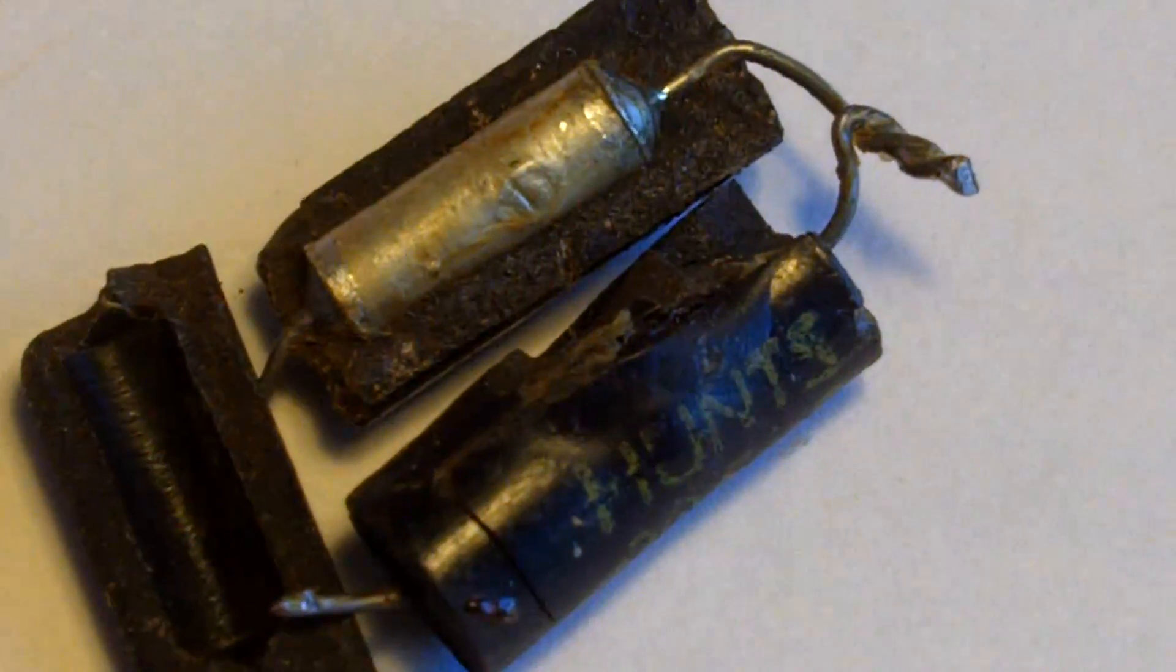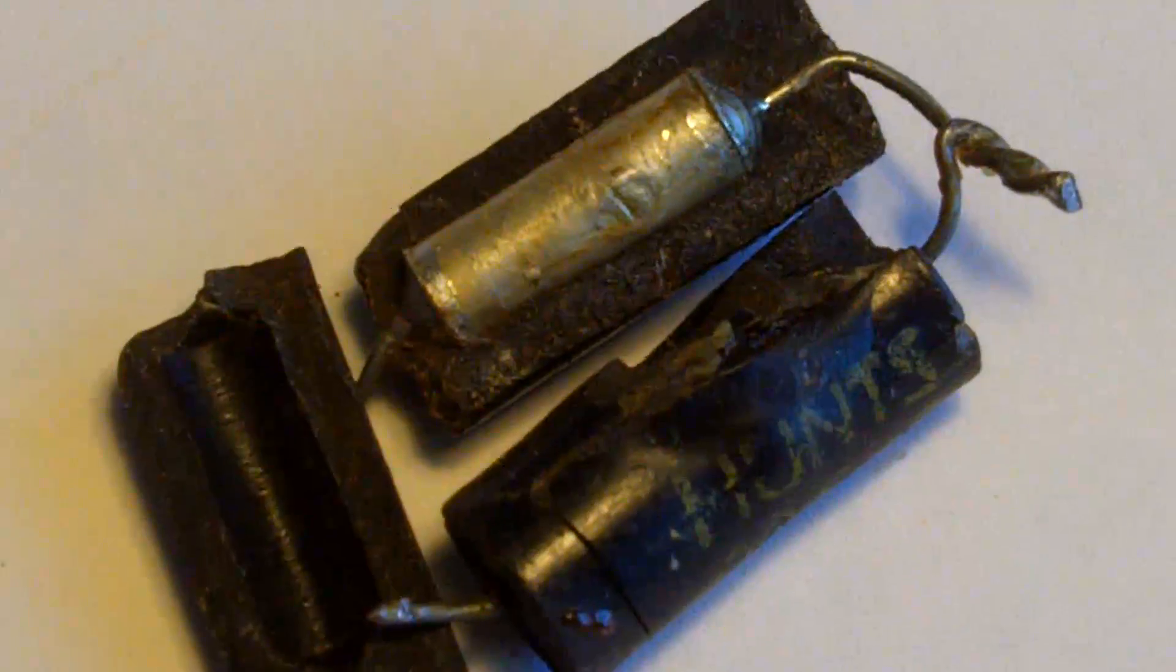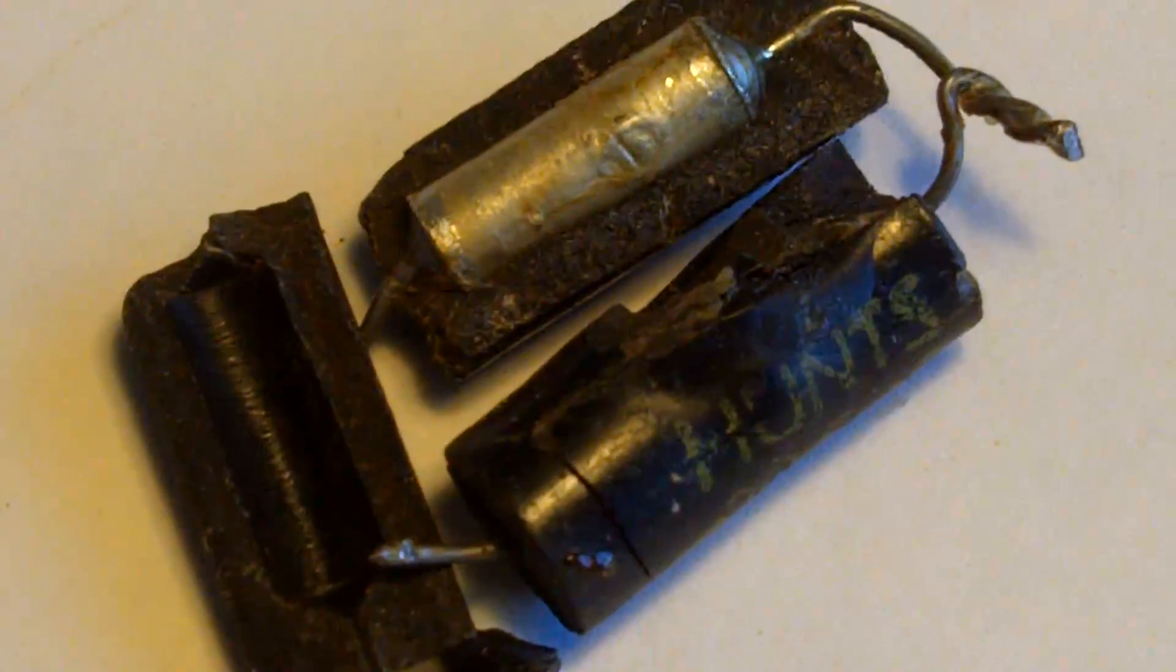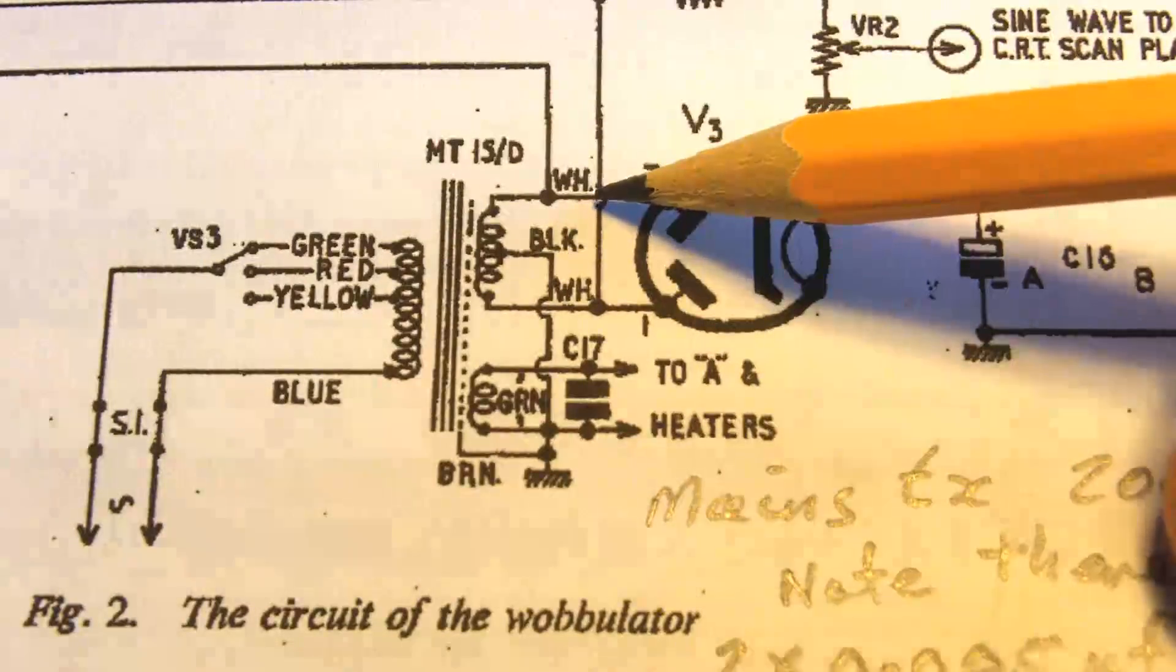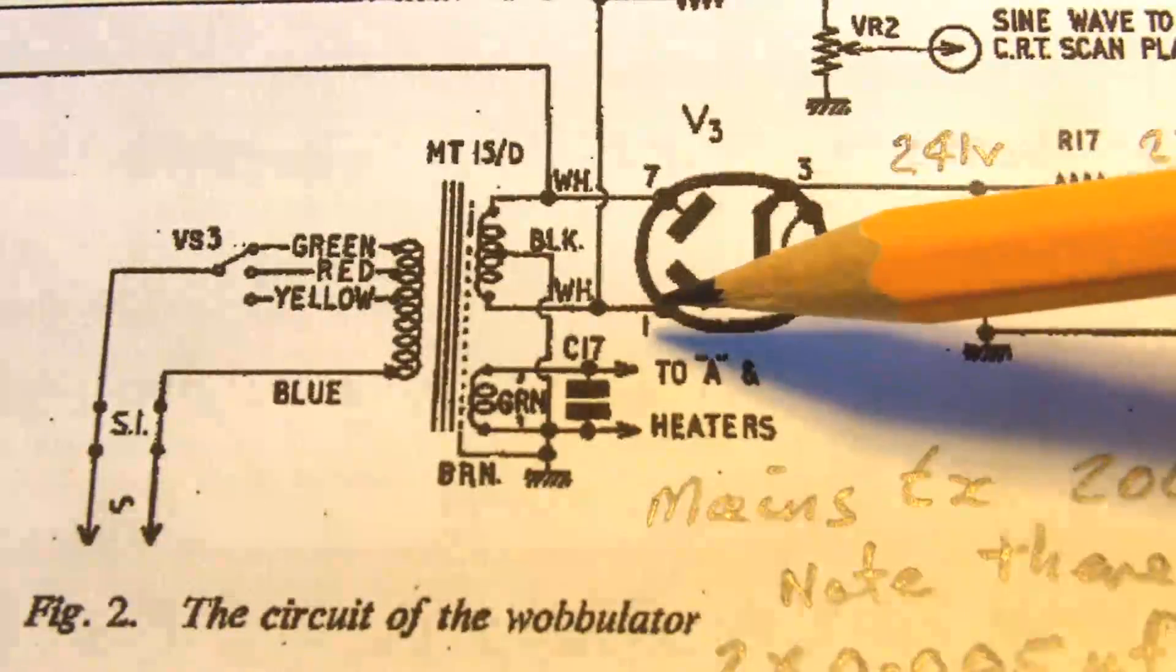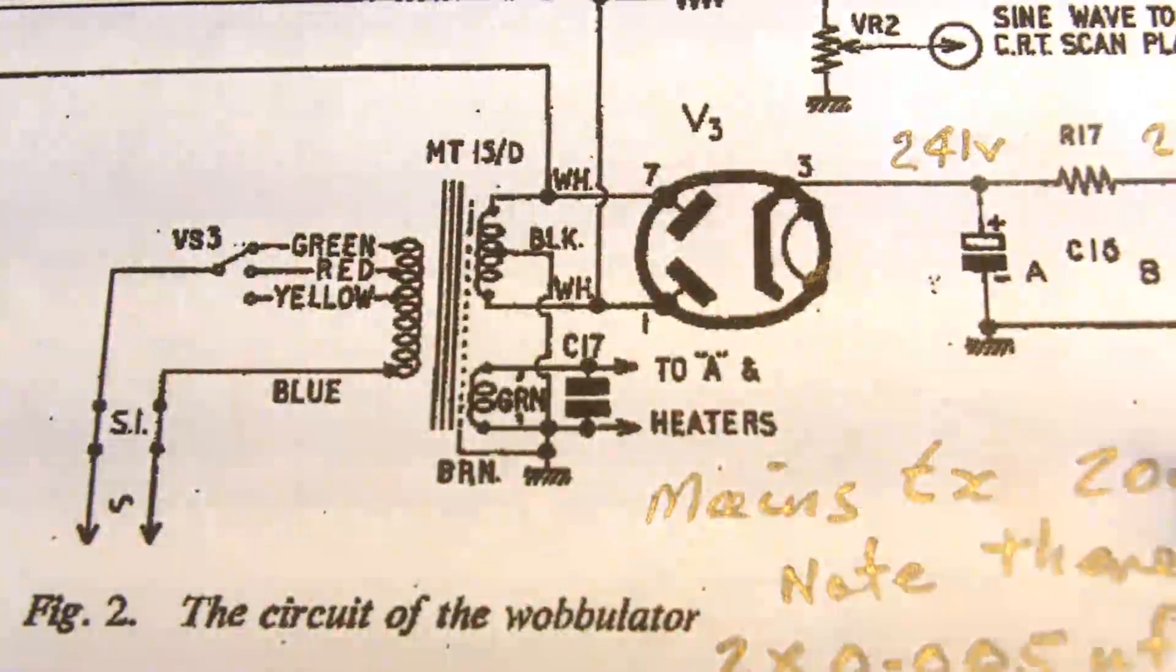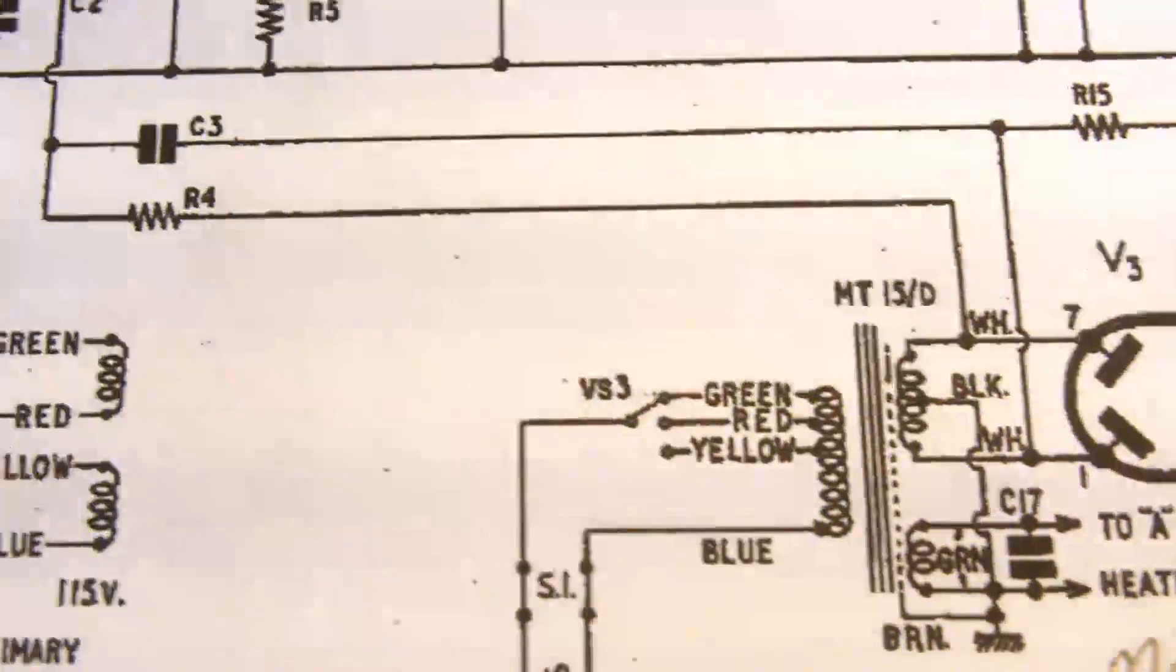So these little jokers failed fairly quickly and they were fitted across there, so across pins 1 and 7 of V3, the rectifier. So they're not shown on this drawing at all, so there's no part of that drawing.